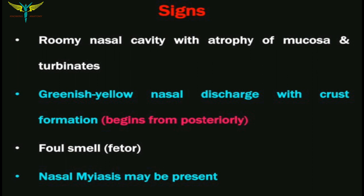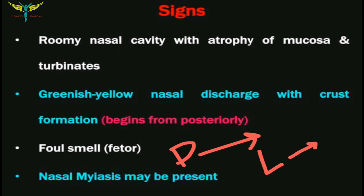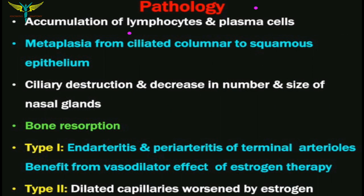Atrophic changes may also be seen in the pharyngeal mucosa, appearing dry and with crusts, which is called atrophic pharyngitis. Similar changes may also occur in the larynx, leading to cough and hoarseness of voice, called atrophic laryngitis. Atrophic rhinitis can also cause a small amount of hearing impairment due to obstruction of the Eustachian tube. In severe cases, it may lead to middle ear effusions.